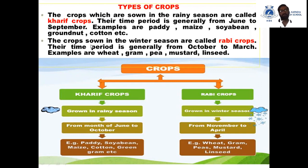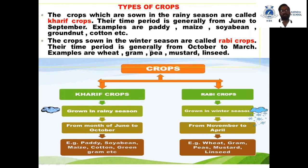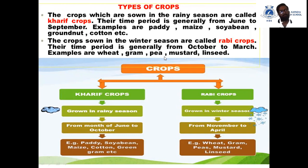The crops which are sown in the winter season are called Rabi crops. The time period is generally from October to March. Examples are wheat, gram, pea, mustard, and linseed.